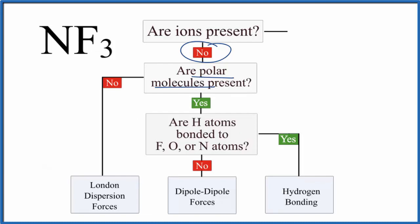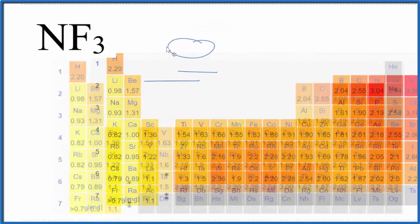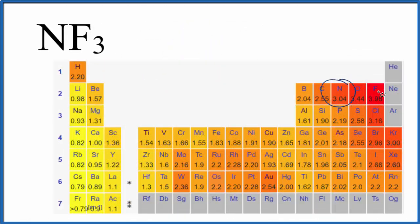If you look at the difference in electronegativity between the nitrogen and the fluorine here, nitrogen right here is 3.04, fluorine 3.98. Fairly big difference in electronegativity. So we would expect that NF3 would be a polar molecule.